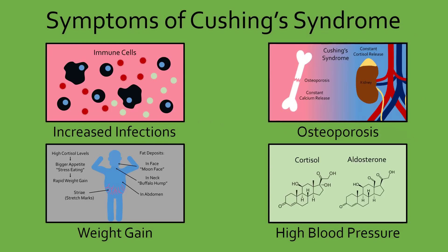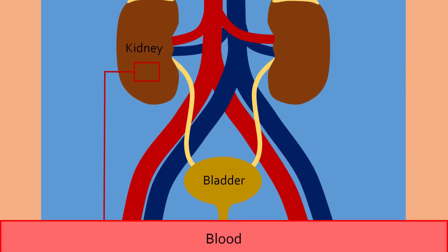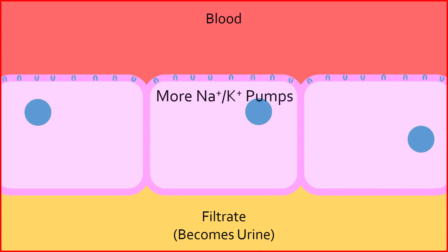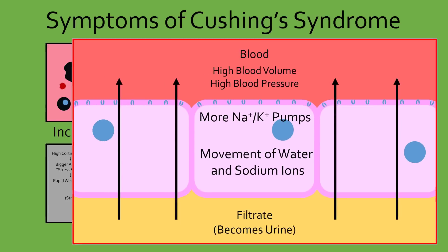Finally, many with Cushing's syndrome suffer from high blood pressure. This is because cortisol and aldosterone are very similar in structure. When cortisol is at extremely high levels as seen in Cushing's syndrome, it can also stimulate aldosterone receptors in the cell to cause effects similar to those of aldosterone. Since aldosterone increases blood pressure, high blood pressure is a common symptom of Cushing's syndrome. In addition, cortisol itself has a property of causing blood vessels to squeeze and get narrower, which further increases blood pressure. High blood pressure will damage the heart, blood vessels, brain, and kidneys, all of which can lead to premature death.